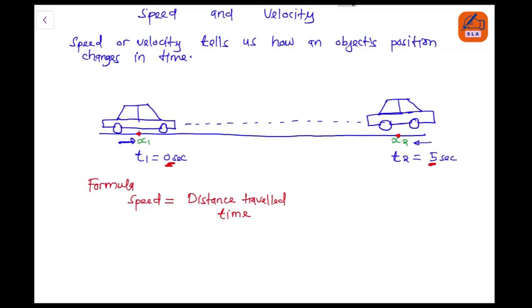So the car used five seconds to go from point X1 to point X2. So speed will be equal to distance traveled. In our case here, from where we started it was 5 meters. It will be 5 m divided by time, time is 5 second. Equal to 1 meter per second.